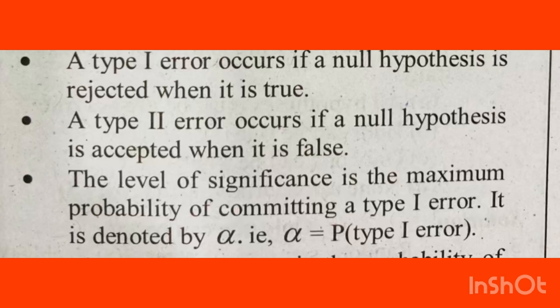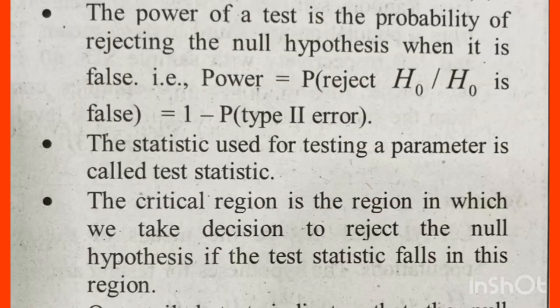You will learn the important concept of level of significance. Level of significance is related to Type 1 error — it is the probability of rejecting the null hypothesis when it is true.